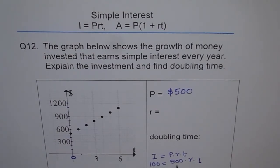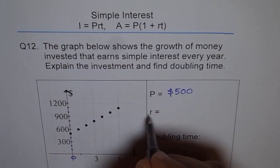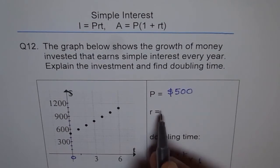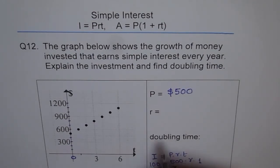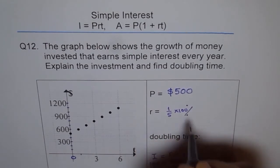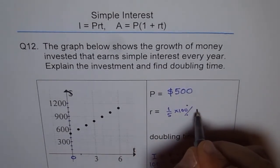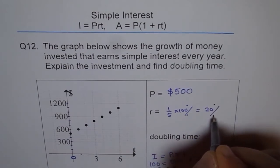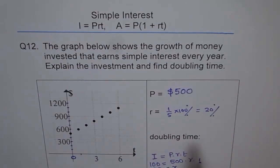R we don't know and T is 1, therefore R = 100 / 500. To find the percent we multiply by 100: R = (100 / 500) × 100 = 100 / 5. So R equals 1/5, which as a percentage is 20 percent.